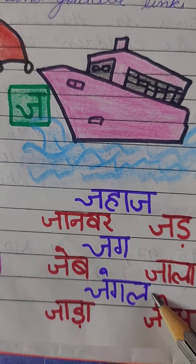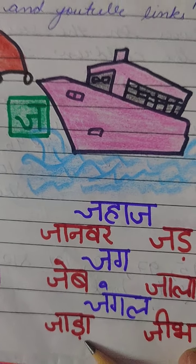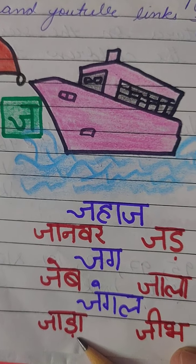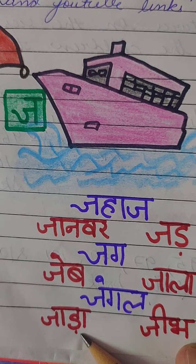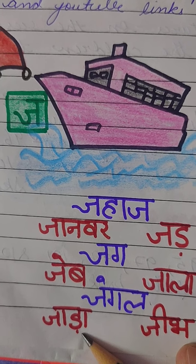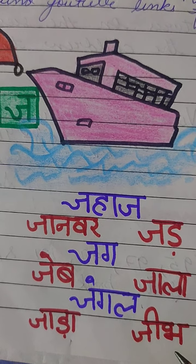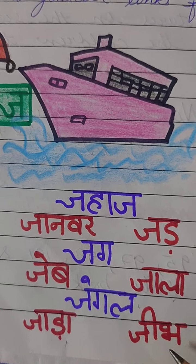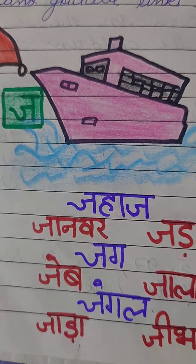J say Jungle — forest. J say Jada. Jada is cold, winters. J say Jeeb. Jeeb is your tongue.